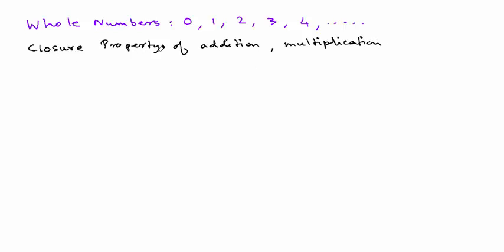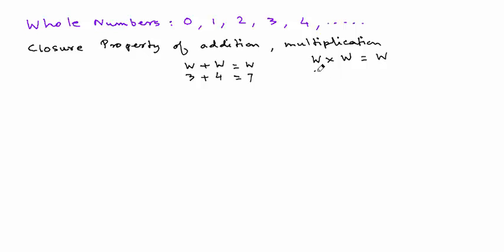The closure property of addition tells us that when two whole numbers are added together — for example, 3 plus 4 — the answer is also a whole number. Similarly, the closure property of multiplication tells us that when two whole numbers are multiplied together, the answer is also a whole number. We could use that same example: 3 times 4 is 12, and 12 is also a whole number.